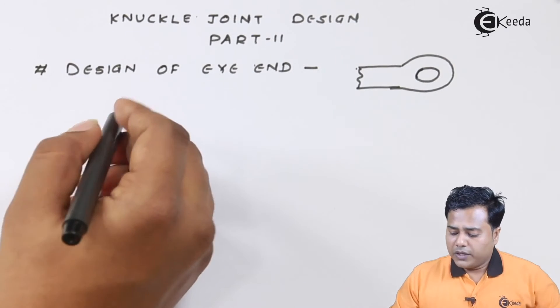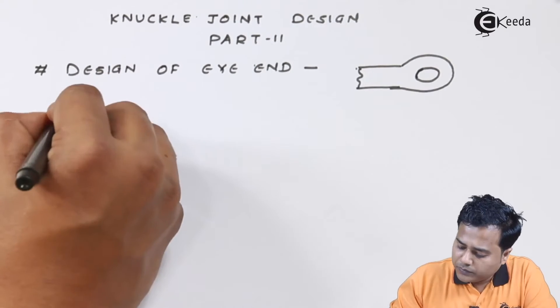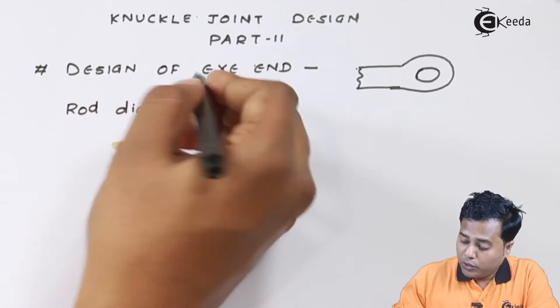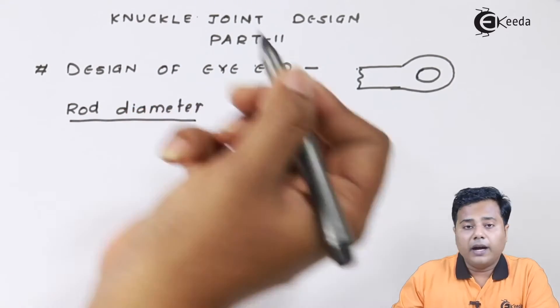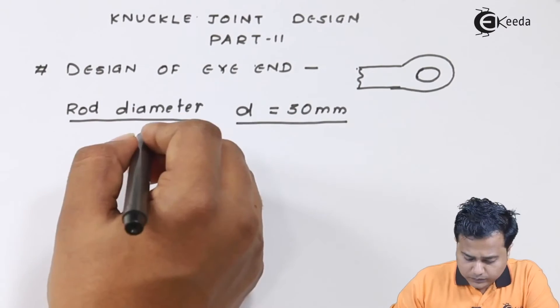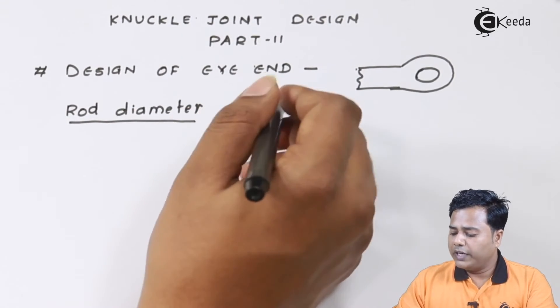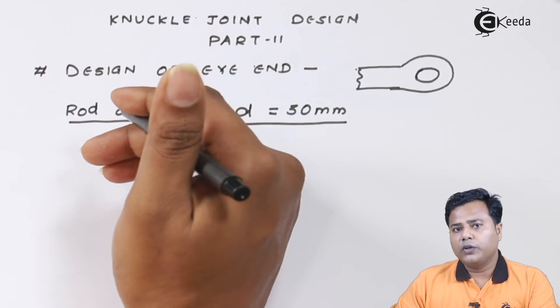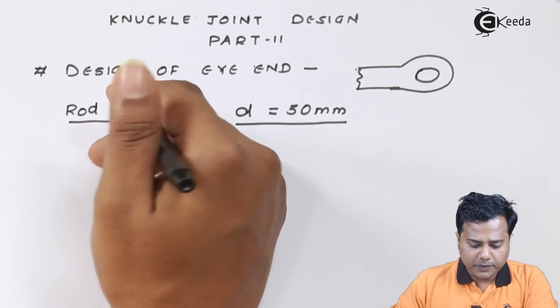So far what we have is rod diameter which is common for both the ends, the eye end as well as the forked end. We had found out the rod diameter is equal to 30 mm. With respect to this only we are going to proceed. So let us start with the first part.